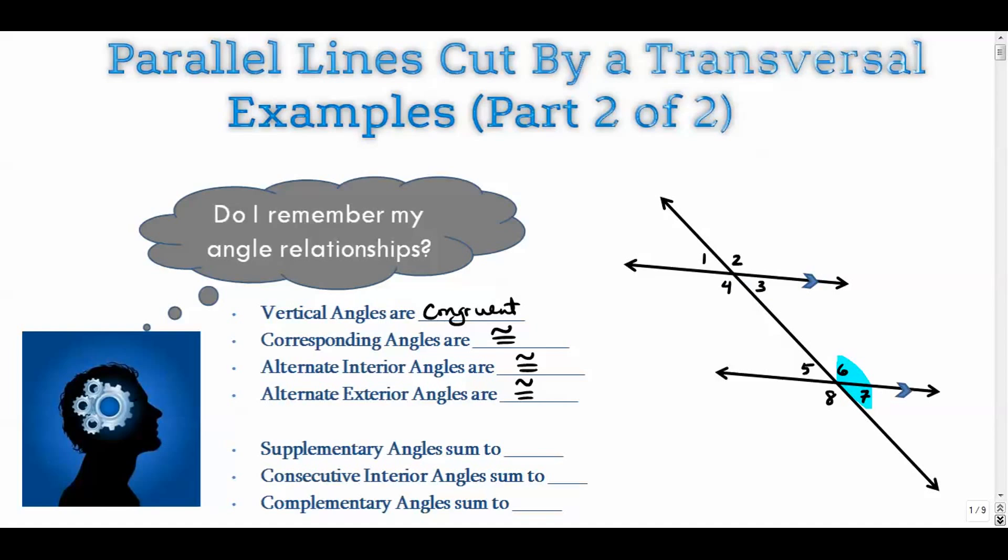Six and seven are also supplementary. Two and three, one and two, one and four, five and six, five and eight, and eight and seven. These are adjacent. They form linear pairs. So they sum to 180 degrees.